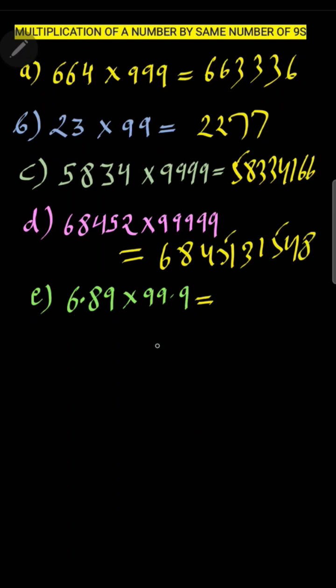And for the last one which contains the decimal, your answer would be 688.311. Since we are having two digits here after the decimal and one digit here after the decimal, so we will place the decimal here and these are the answers.